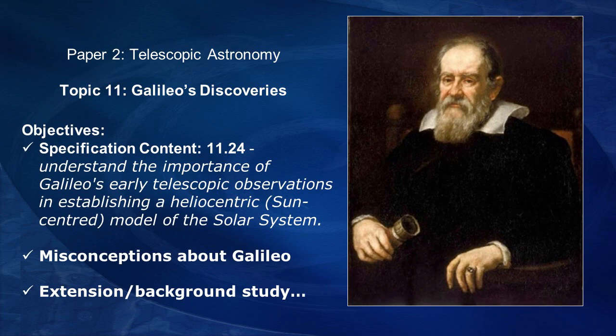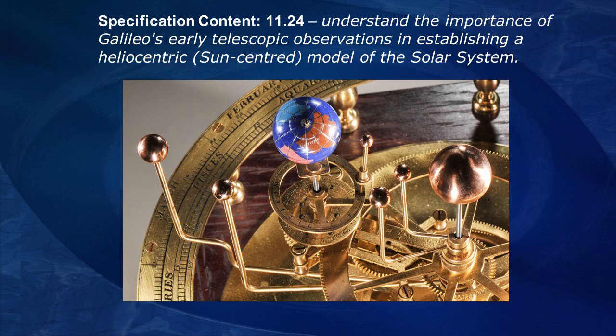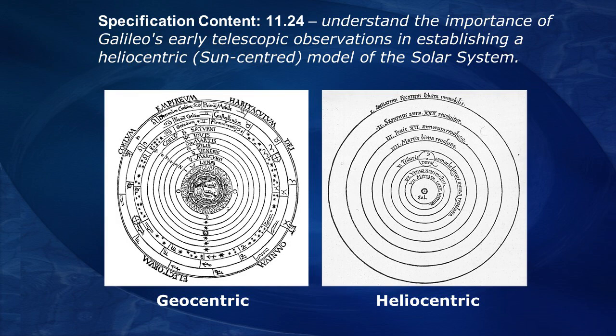In this video we're hopefully going to get three things done. Firstly we're going to look in detail at specification section 11.24, which looks at the early observations that Galileo made with the telescope. It's also linking to the big debate between the geocentric, the earth-centered, and the heliocentric, the sun-centered view of the universe. Galileo's observations had a big impact on people changing their minds from geocentric to heliocentric.